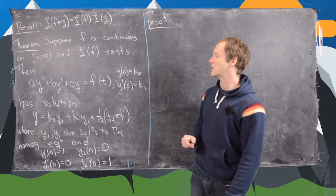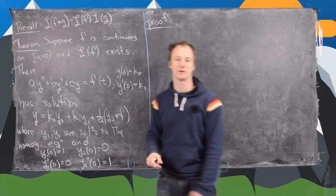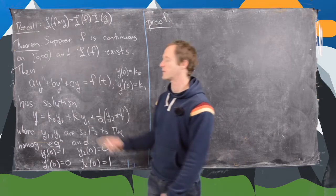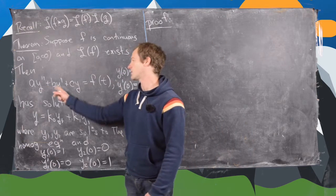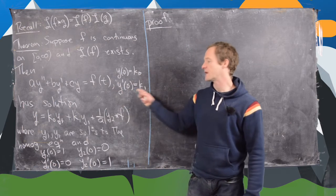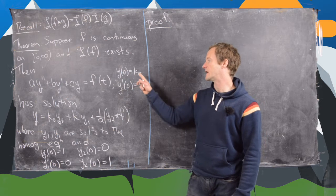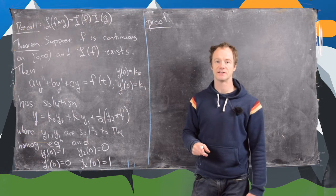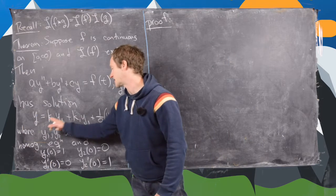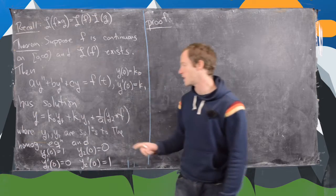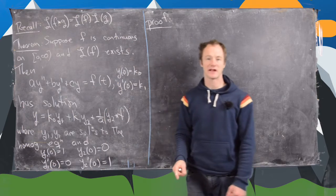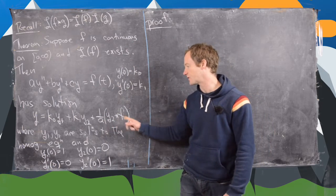Now let's look at our theorem. We suppose that f is continuous on the interval 0 to infinity and that the Laplace transform of f exists. We consider the second-order differential equation: a·y'' + b·y' + c·y = f(t), with initial conditions y(0) = k0 and y'(0) = k1. The solution is y = k0·y1 + k1·y2 + (1/a)·(y2 * f), where * denotes convolution and a is the coefficient in front of y''.